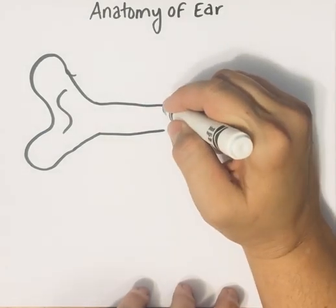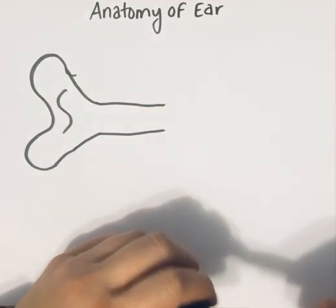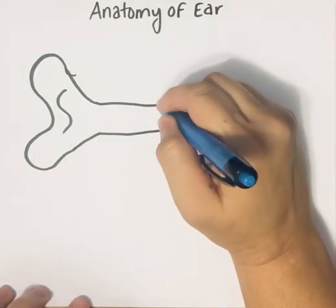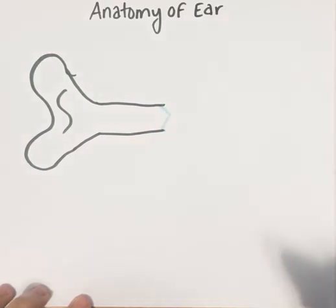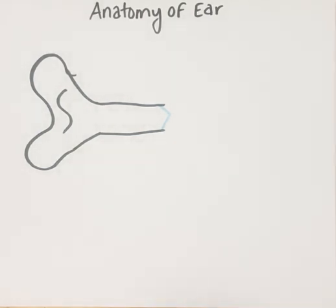The canal ends with a translucent, slightly transparent cone-shaped structure — that is your tympanic membrane, or your eardrum. So these are all external ear structures. The outer ear collects and channels sound waves to the middle and inner ear.